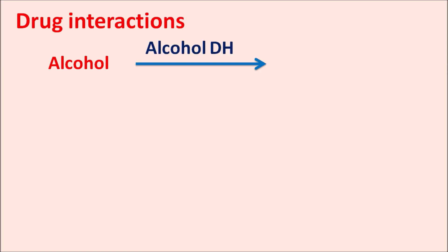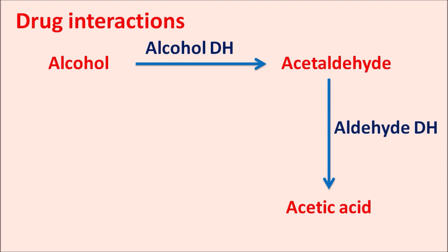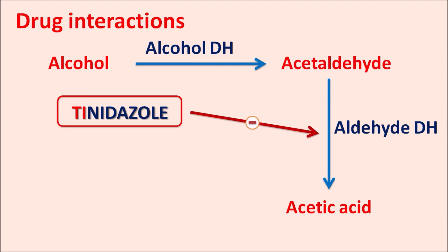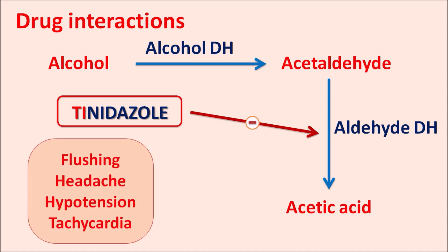Regarding drug interactions, alcohol (ethanol) in beverages is oxidized by alcohol dehydrogenase to acetaldehyde, which is then converted to acetic acid by aldehyde dehydrogenase. Tinidazole, like metronidazole, blocks aldehyde dehydrogenase activity. This causes acetaldehyde to accumulate in the body, resulting in symptoms such as flushing, headache, hypotension, and tachycardia. Therefore, alcohol must be avoided while taking tinidazole.